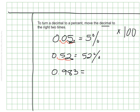983 thousandths — I would do the same thing: once, twice. This time my decimal lands right in between the 8 and the 3, so it would be 98 and 3 tenths of a percent. There's a decimal in my percent — that's perfectly okay.